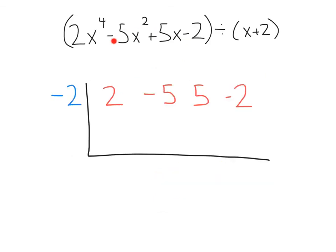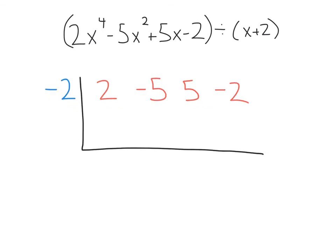Challenge time! For this example, we've set up the synthetic division chart, but something is wrong — this is not set up correctly. I want you to think about why. We've got coefficients of two, negative five, five, and negative two. We've got the opposite of x plus two, which is minus two. So what do you think is going wrong? If you thought there needed to be a zero here, you were absolutely correct. If you didn't get it, that's okay — and if you didn't try, get your life together.